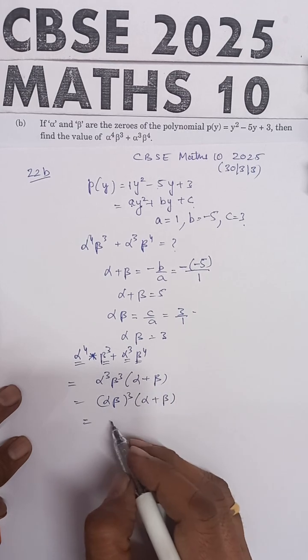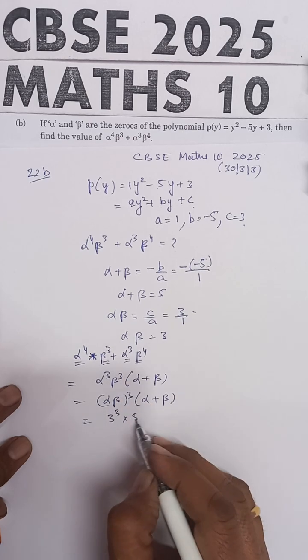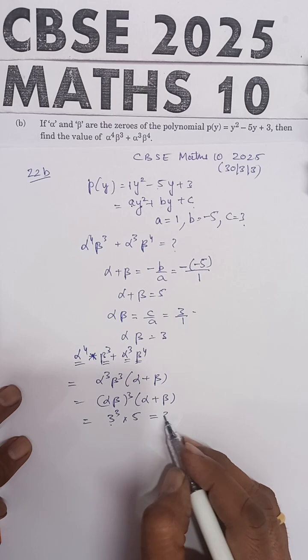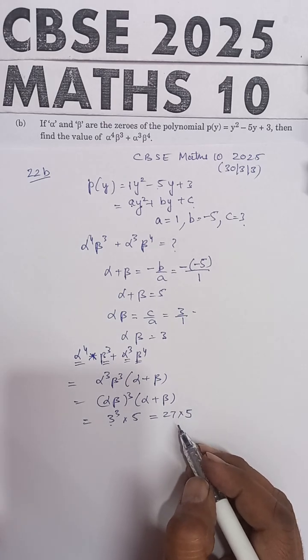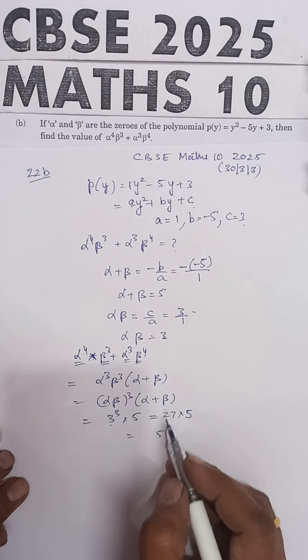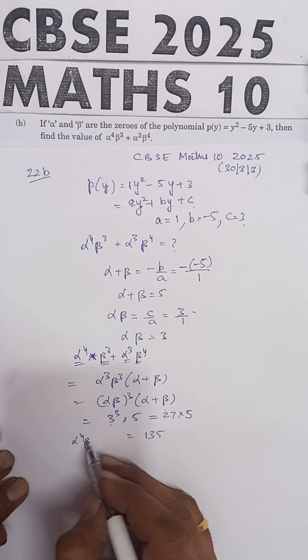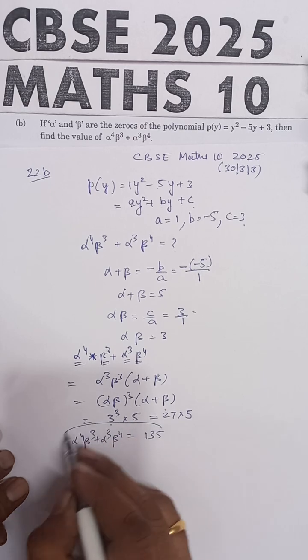(αβ)³ = 3³ = 27, times (α + β) = 5. So 27 × 5 = 135. Therefore, α⁴β³ + α³β⁴ equals 135.